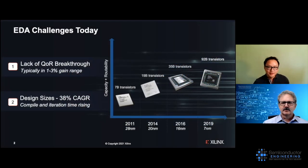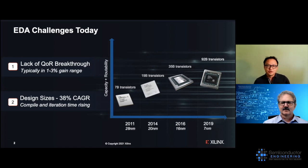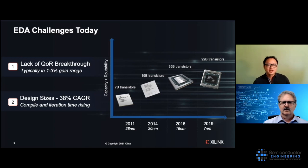Let's take a closer look. So we're looking at an EDA challenge we see in the industry, and this is not exactly new. We would have said the same thing five years ago, where transistors are increasing drastically and exponentially — proven just looking at Xilinx's devices, which are increasing by 38% CAGR in number of transistors. This means your compile time and design iteration time are increasing. Also, it's getting more difficult to hit the quality of results you need. EDA algorithms have been around for multiple decades, and improvement is somewhat saturated in the 1% to 3% range. We actually need a breakthrough to get 10% or double-digit improvement in quality of results.